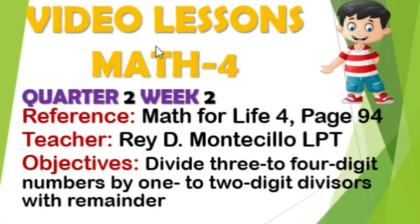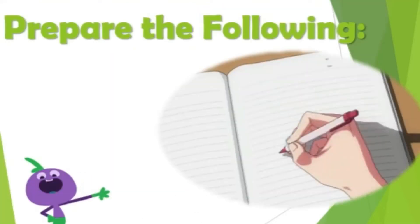This is our video lesson in Math for Quarter 2 Week 2. The reference I'm using, Math for Life, can be found on page 94. At the end of this lesson you're expected to divide three to four digit numbers by one to two digit divisors with remainder. Please prepare